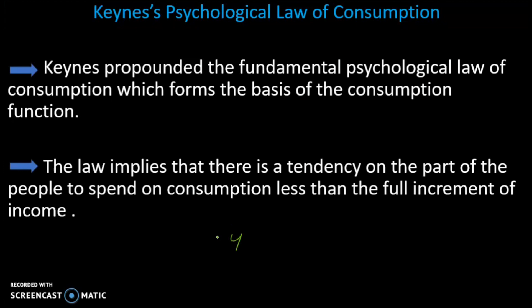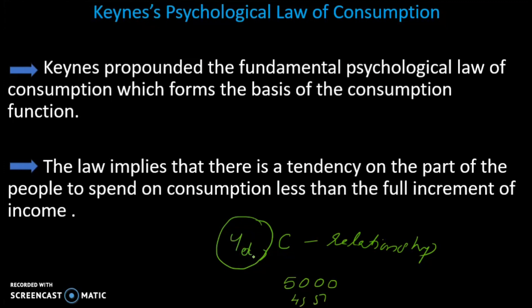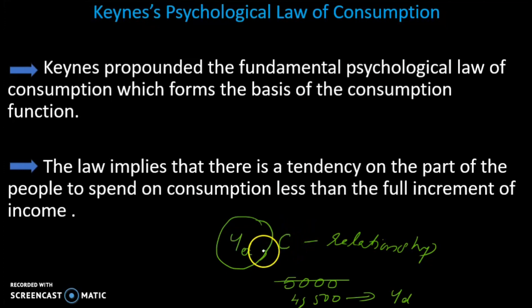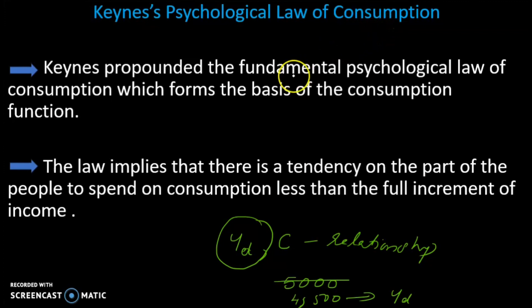Professor Keynes said that disposable income and consumption have a relationship. Disposable income means the income we are left with — for example, if we earn 5,000 rupees and tax is 500 rupees, disposable income is 4,500 rupees. Keynes says this relationship between income and consumption is based on psychology, which is why it is called the psychological law of consumption.